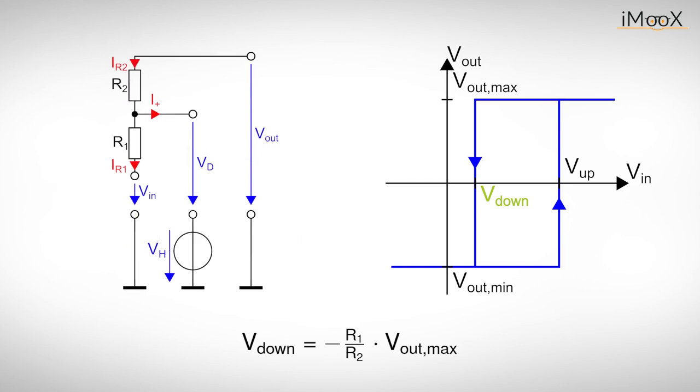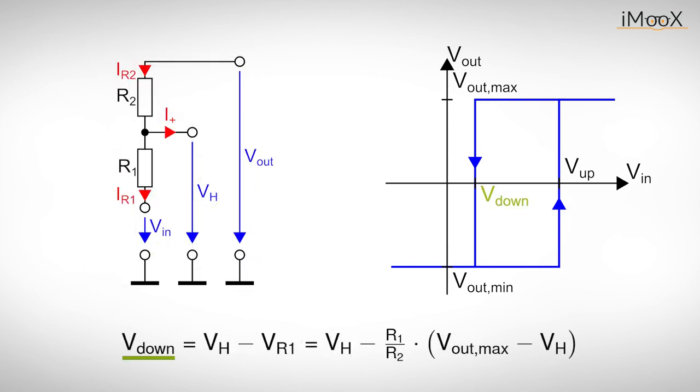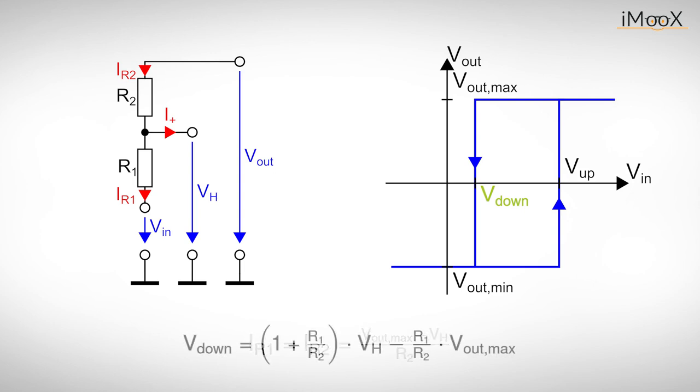The calculation of the trigger levels Vup and Vdown is basically the same as before. We focus on the resistive network again, but this time we add Vh to the middle terminal. In the moment of switching, Vd is 0 volts and the middle contact is at a potential Vh. We calculate Vdown first to see if it really can become positive now. The rest is just as before. We calculate IR2, which then flows on through R1.